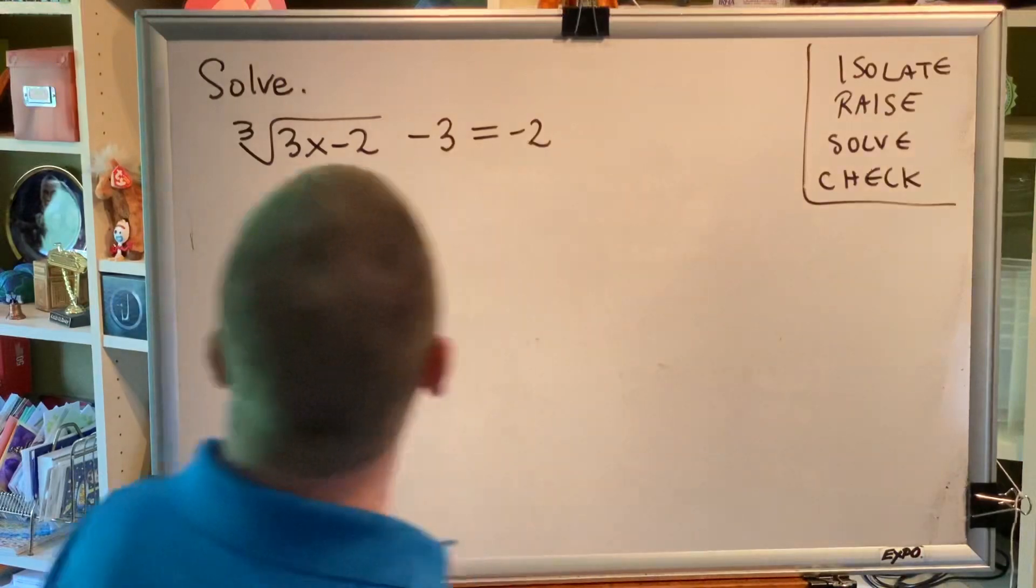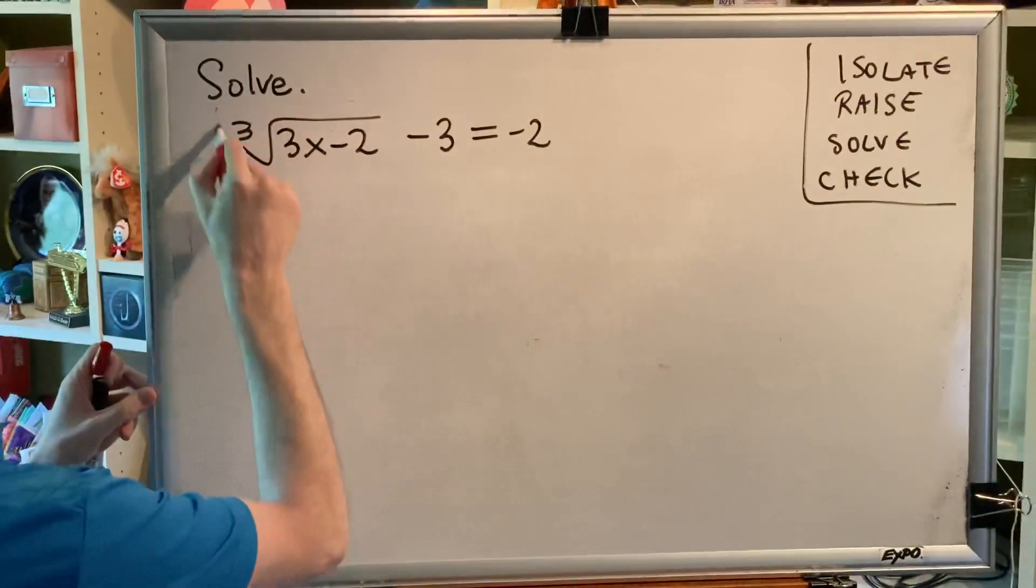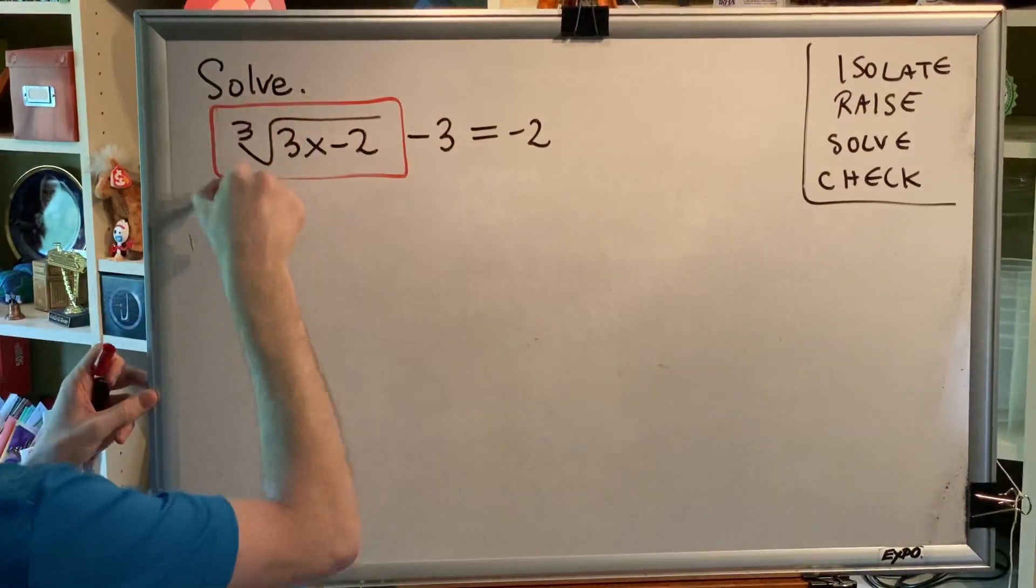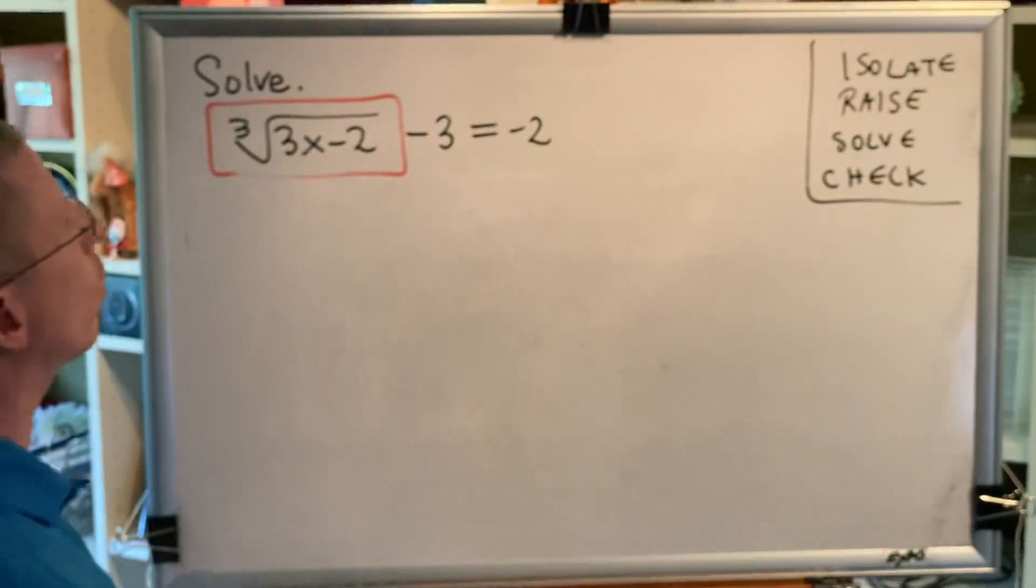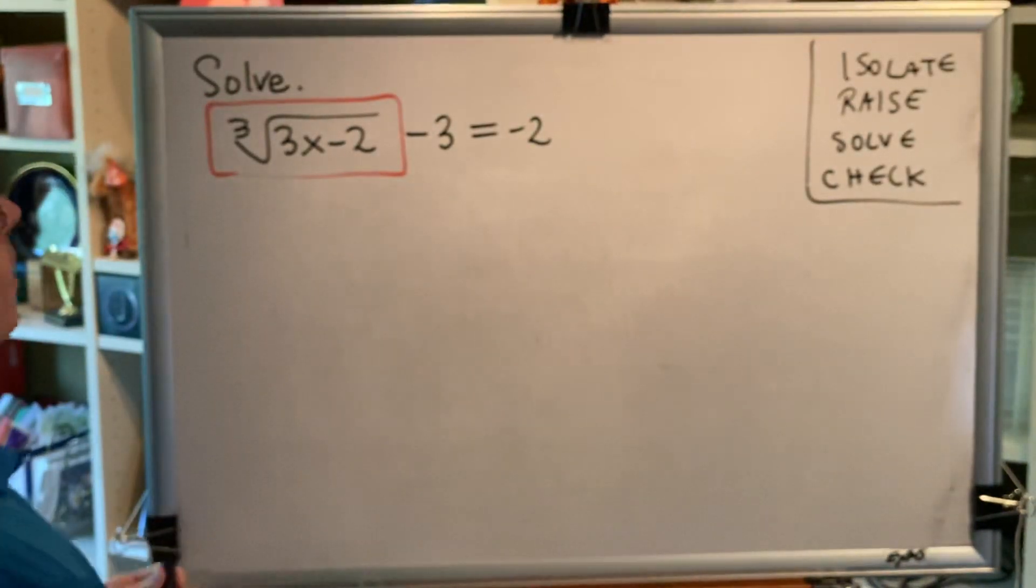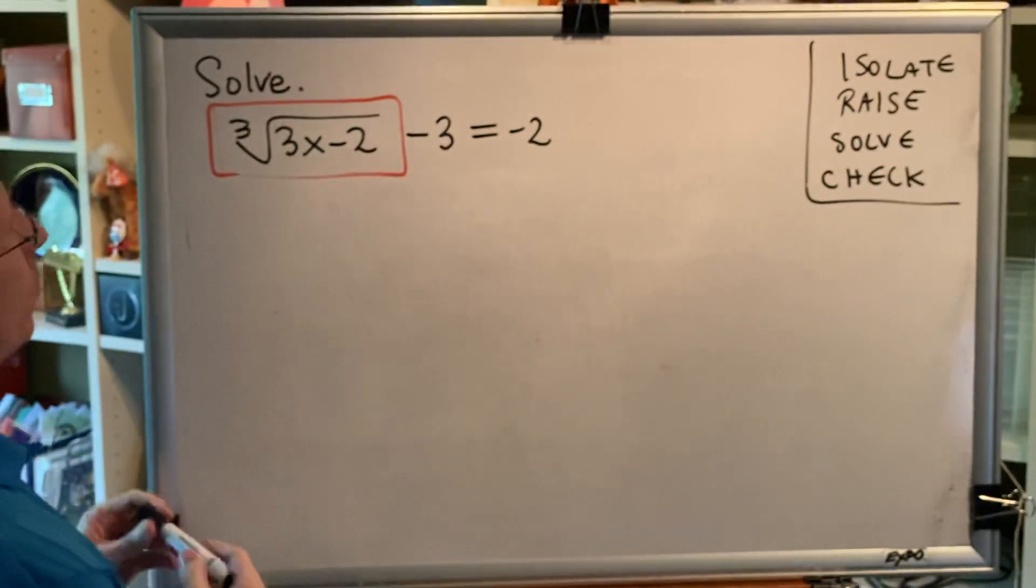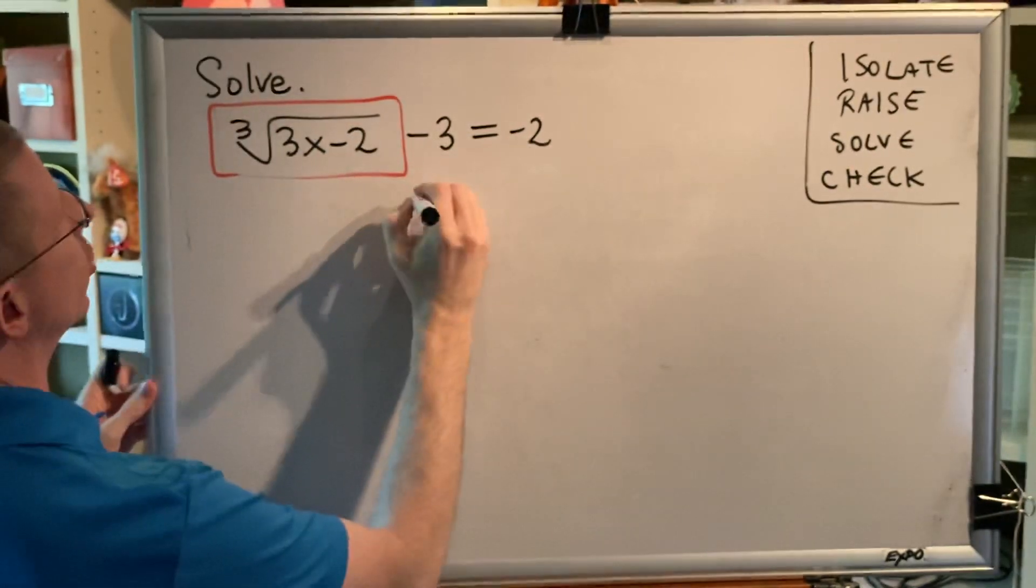In this problem we only have one radical. It is this right here. Isolate means to get it alone so that there's no adding or subtracting before or after it, and no dividing. We have subtraction after this radical, and the way you can get rid of subtraction is with addition.